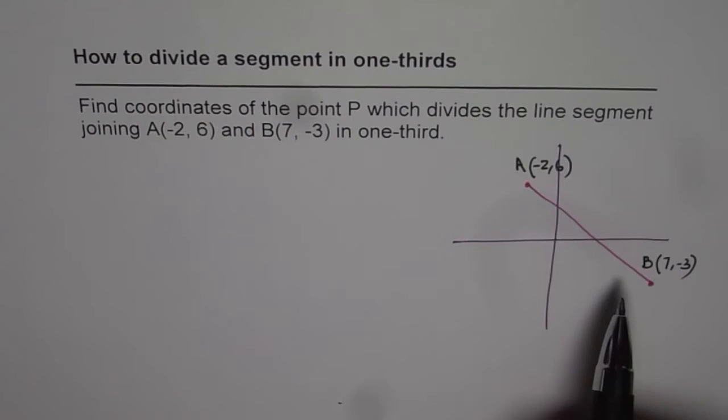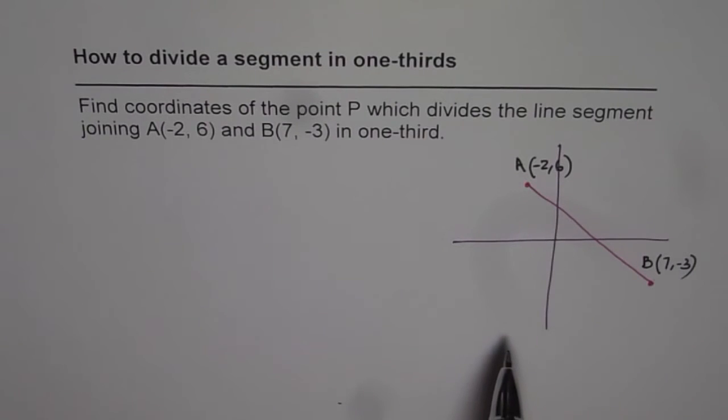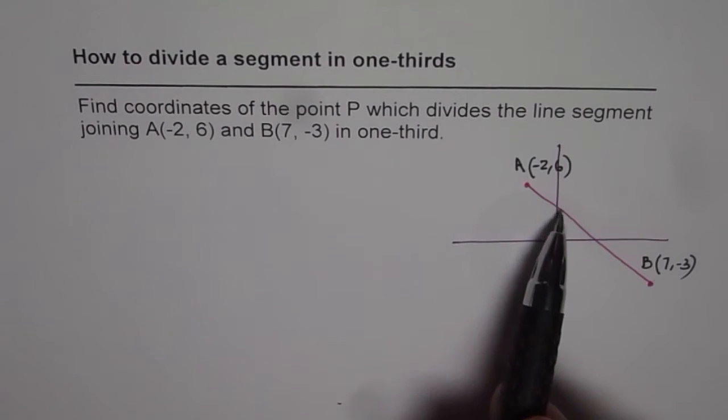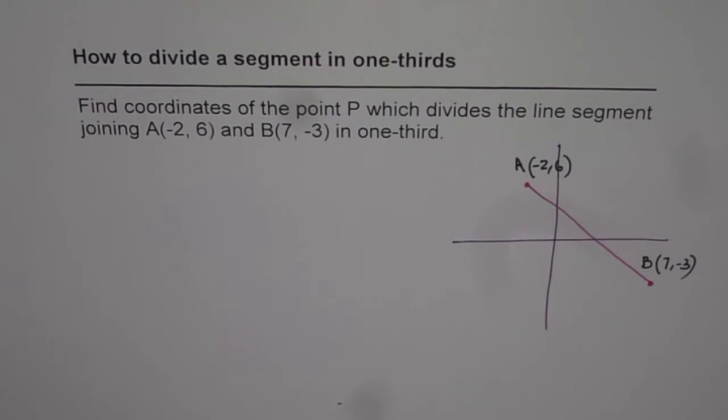Now we need to divide this line segment with the help of point P so that it is divided into one-third and two-thirds. How to find that distance? How to find that point? That is the real question.